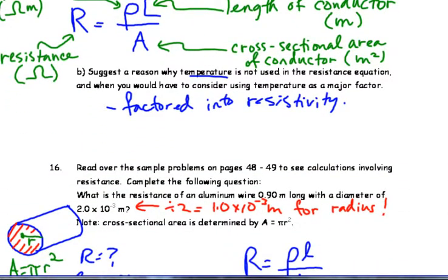So if we look at the question, what is the resistance of an aluminum wire that's 0.90 meters long, has a diameter of 2.0 times 10 to the minus 3 meters. Note the cross-sectional area, area of the circle there, pi r squared.